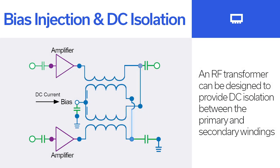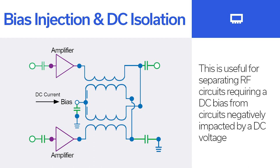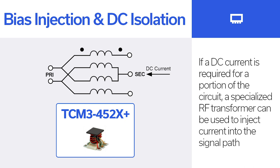First, let's talk about bias injection and DC isolation. This is where an RF transformer can be designed to provide DC isolation between the primary and the secondary windings, which is useful for separating RF circuits requiring a DC bias from circuits negatively impacted by a DC voltage. If a DC current is required for a portion of the circuit, a specialized RF transformer can be used to inject current into the signal path. For example, center-tapped transformers can inject a DC bias and replace two bias T's. This will eliminate a traditional bias T approach to provide the DC, simplify the PCB layout and save space.